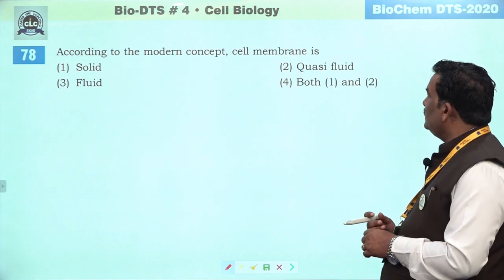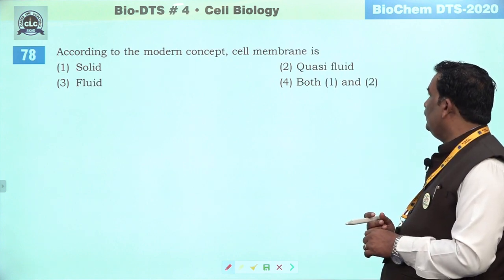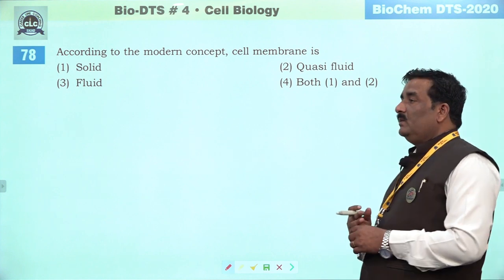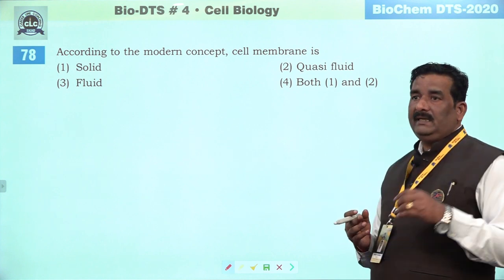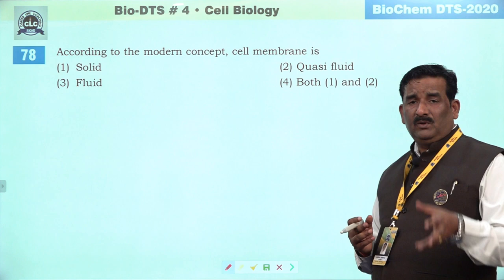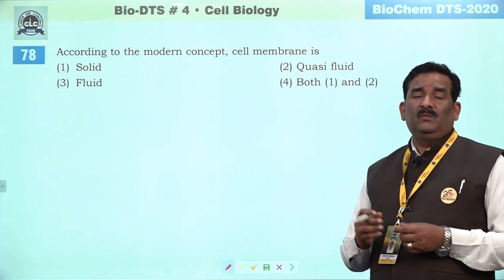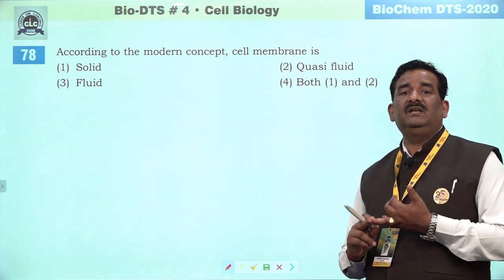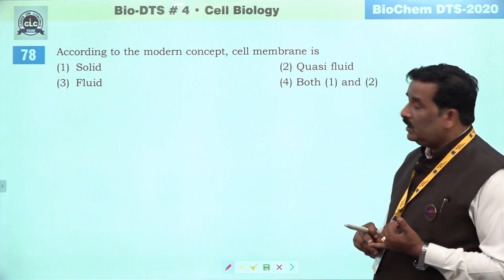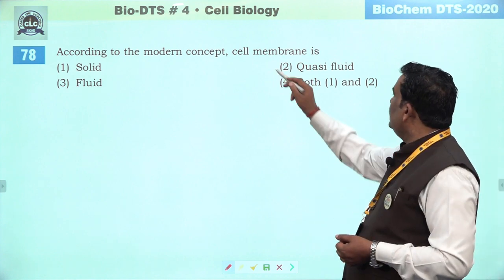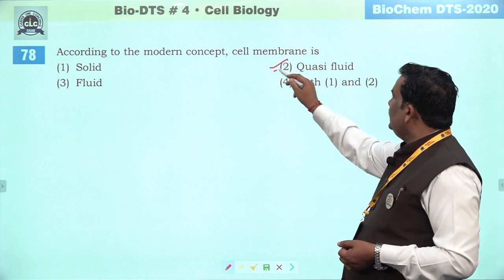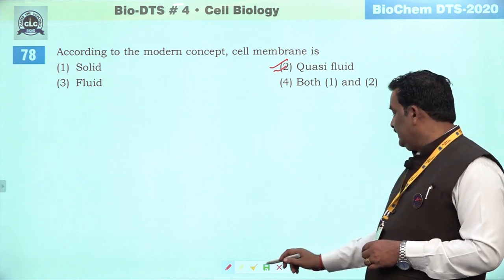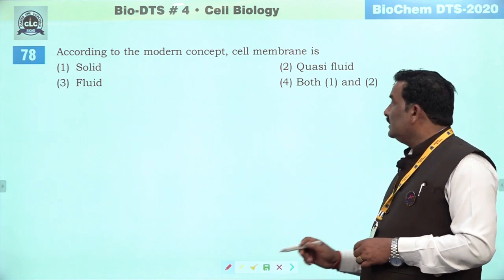Next question: according to the modern concept of cell membrane, it is quasi fluid in nature. Quasi nature kai basis par prove ho chuka hai — fillability hai — cell division, endocytosis, cell junction, growth of cell. Isliye quasi ek better option hai. Second is the right answer. Next question: porin protein in outer membrane are present in following — mitochondria and chloroplast — even bacteria mein bhi outer membrane mein porin protein hoti hai. Third is right answer.